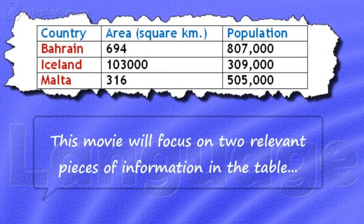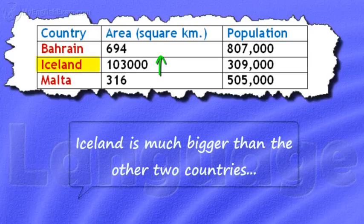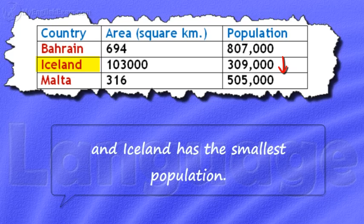This movie will focus on two relevant pieces of information in the table. Iceland is a much bigger country than the other two countries, and Iceland has the smallest population.